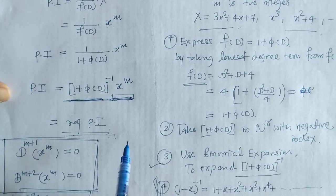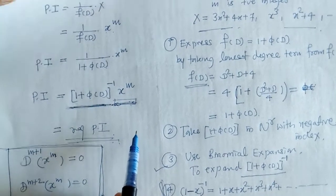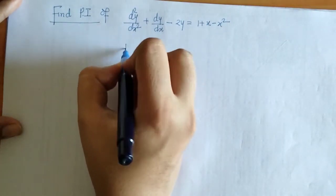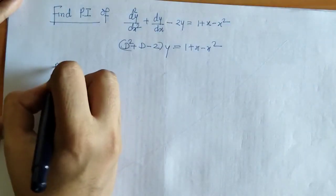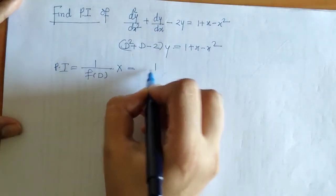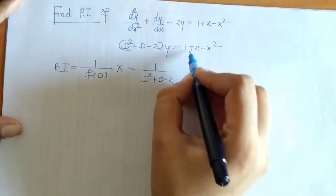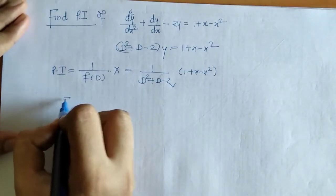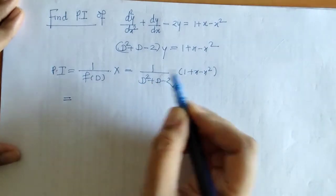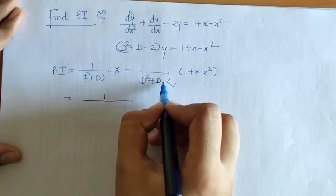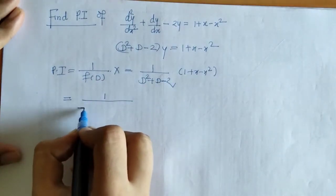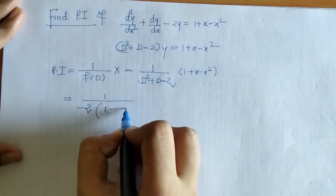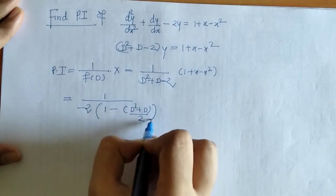Now we solve one example to understand this rule. We have to find the PI of a given expression. We write down its operator form and identify f(D). Then we express f(D) as 1 plus φ(D) by taking the lowest degree term outside.